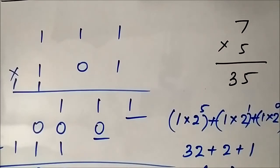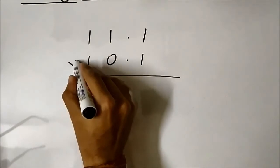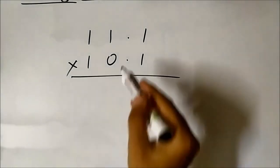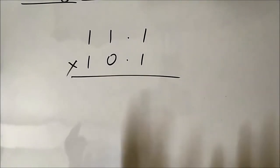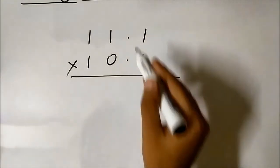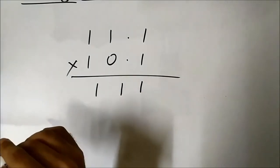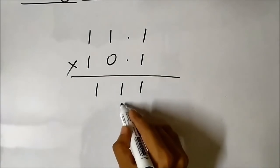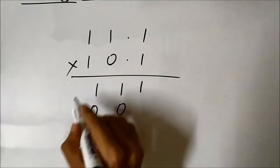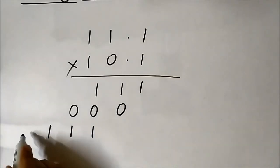Now let us take numbers involving fractional parts and see how multiplication is performed with binary points. The process is almost similar to normal multiplication. For the partial products: 1×111 = 1 1 1; then 0×111 = 0 0 0 (shifted); then 1×111 = 1 1 1 (shifted two positions). Let us now perform the addition.